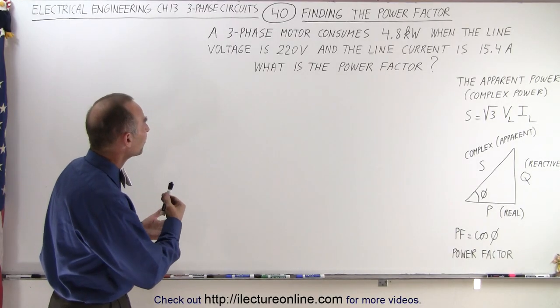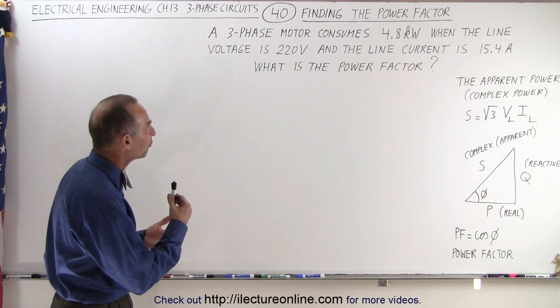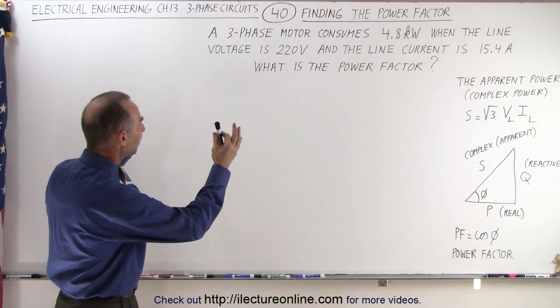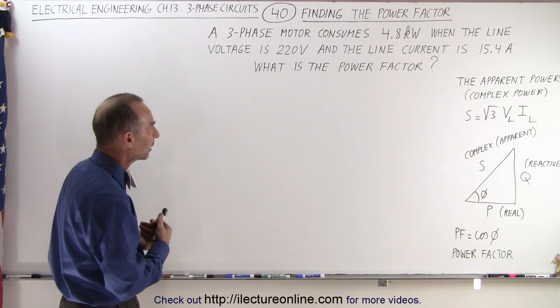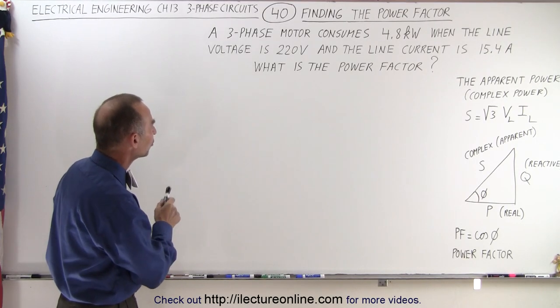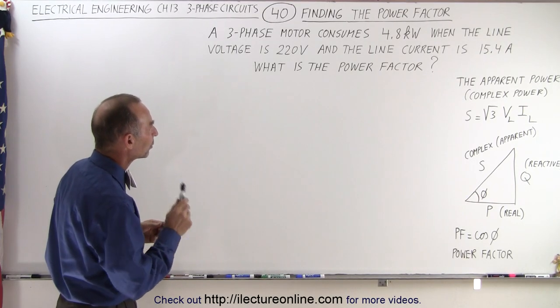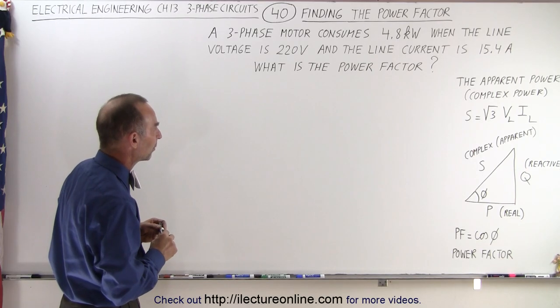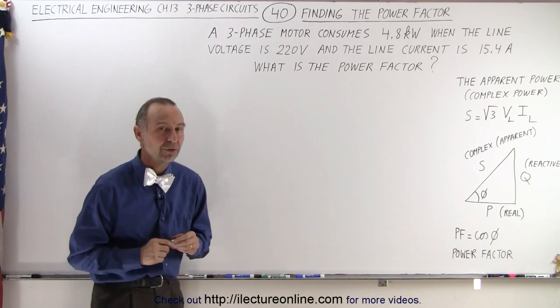We're given that we have a three-phase motor consuming 4.8 kilowatts, so that's the load, the motor consuming 4.8 kilowatts, when the line voltage is 220 volts and the line current is 15.4 amps. What is the power factor?